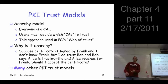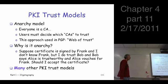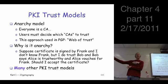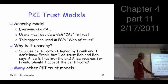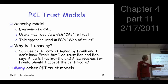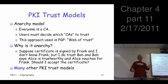Believe it or not, this is actually used in practice. PGP — Pretty Good Privacy — which is very widely used, uses this approach, and they call it the web of trust. You trust somebody, and they trust somebody else, so you trust them. It has this transitive flavor to it. For example, suppose I have a certificate signed by Frank — I don't know who Frank is — but I do trust Bob, and Bob says Alice is trustworthy, and Alice vouches for Frank. So should I accept the certificate?